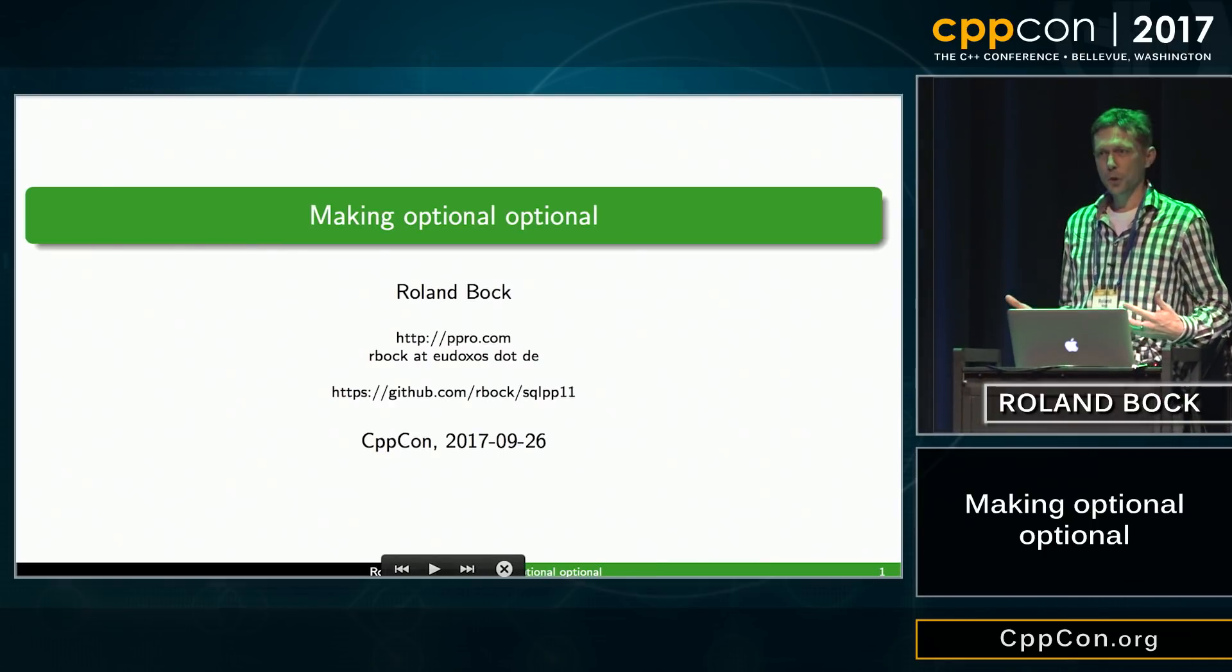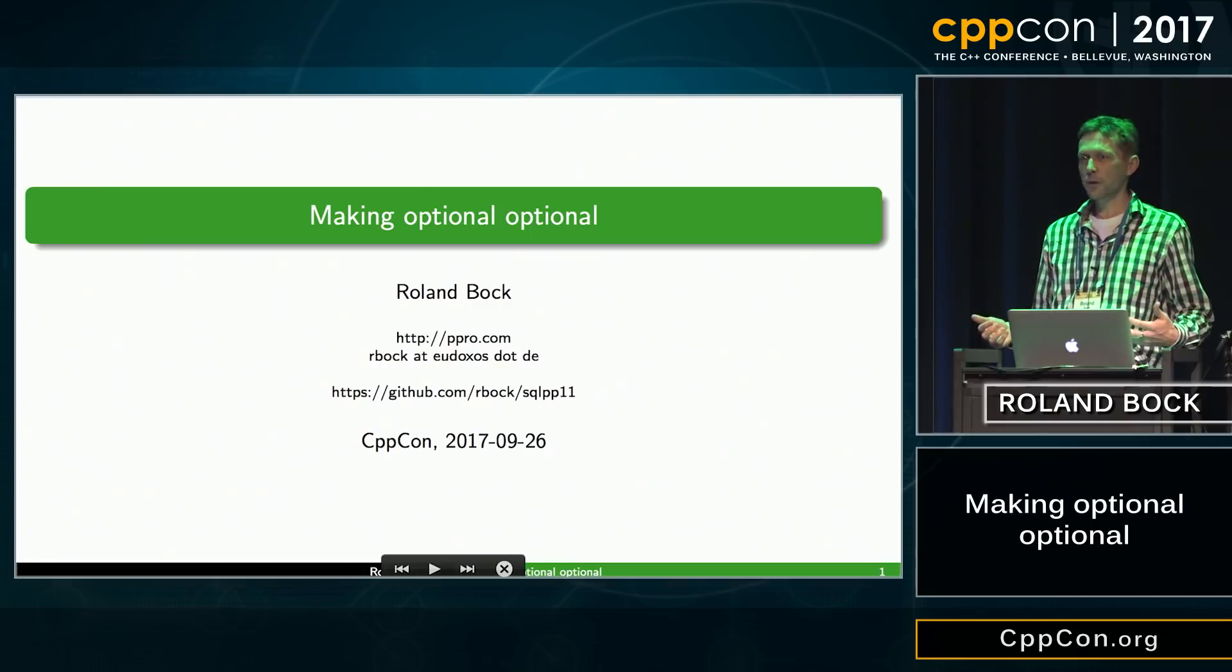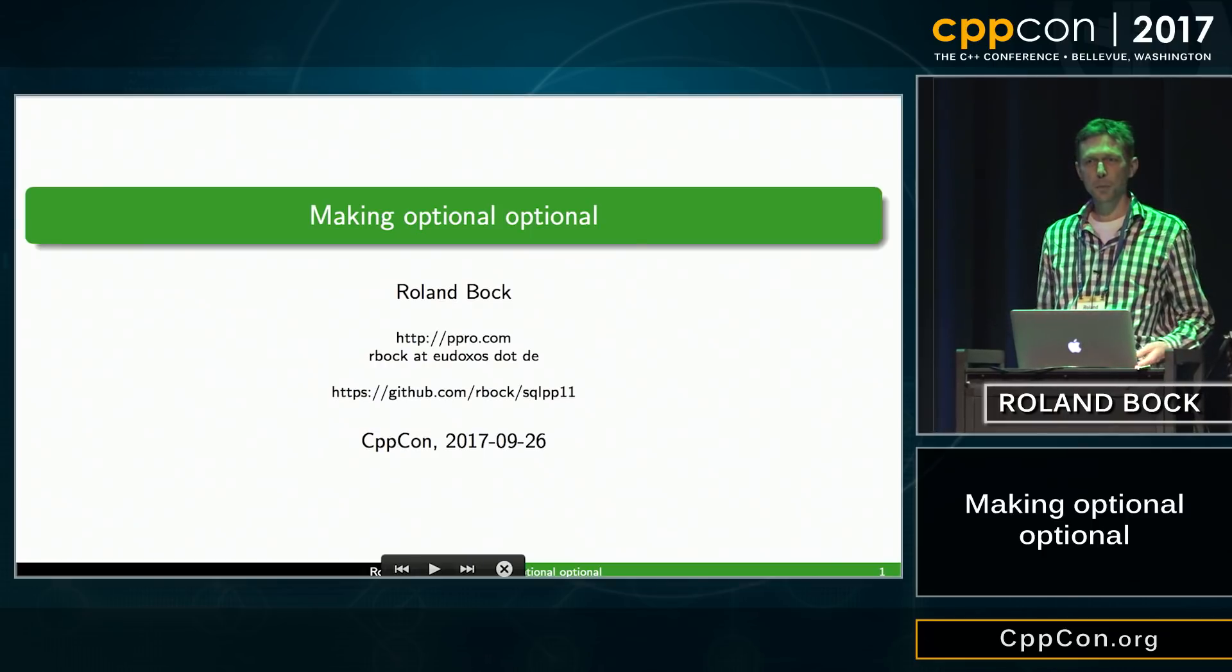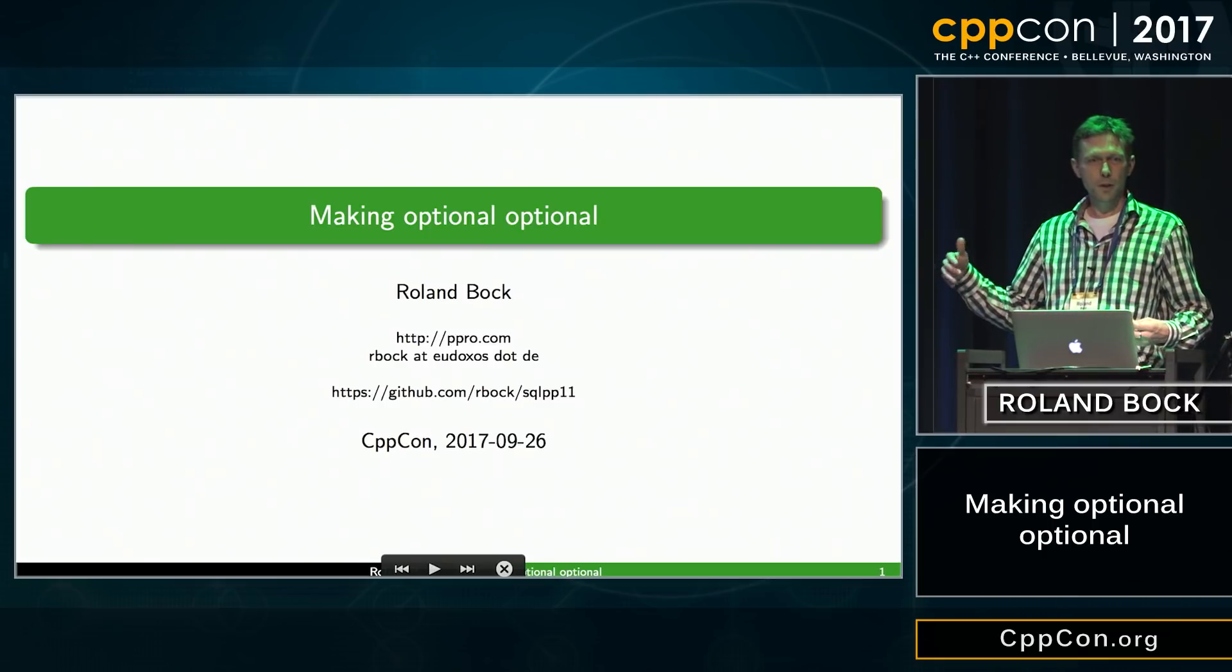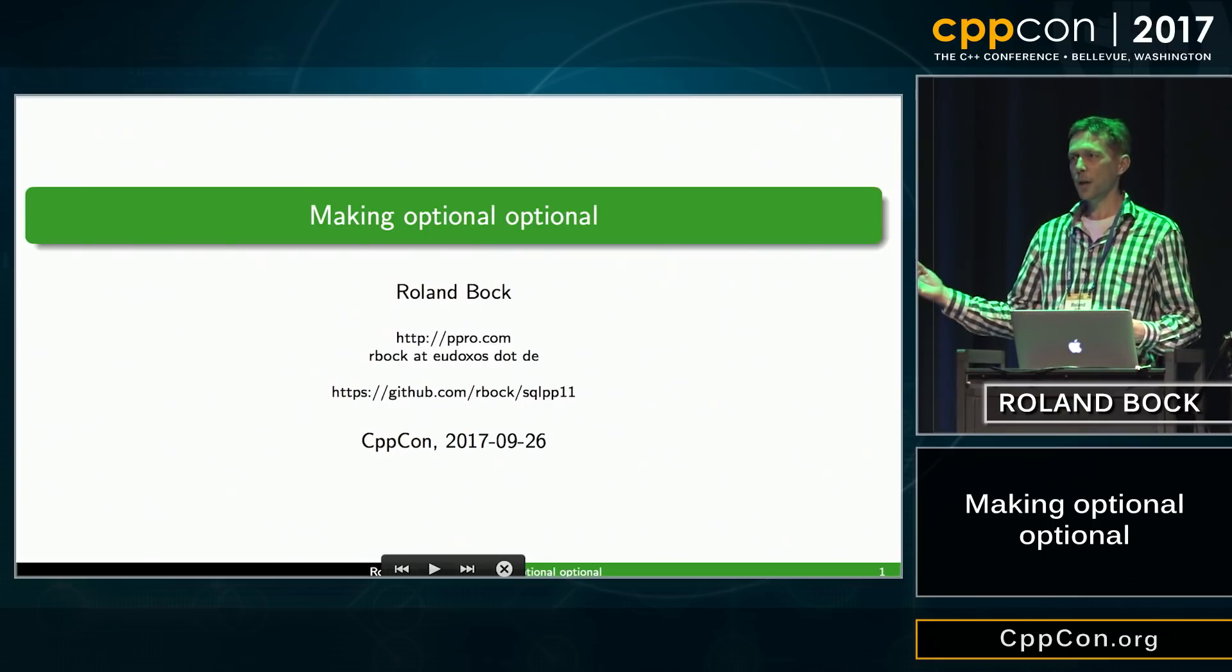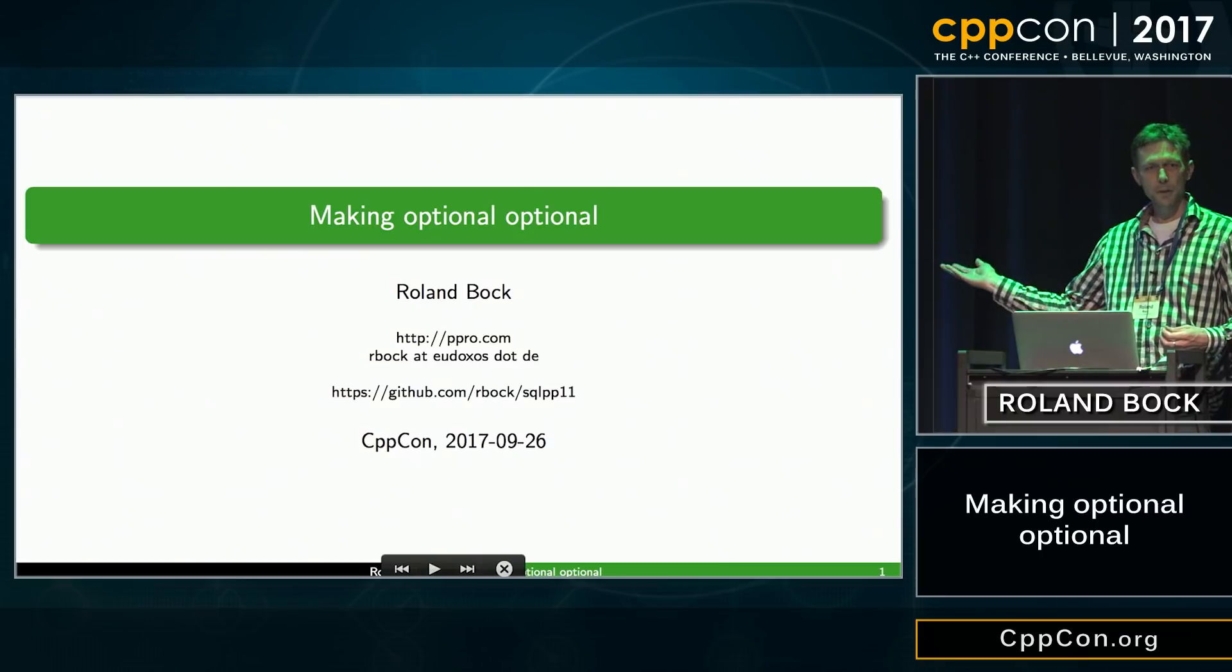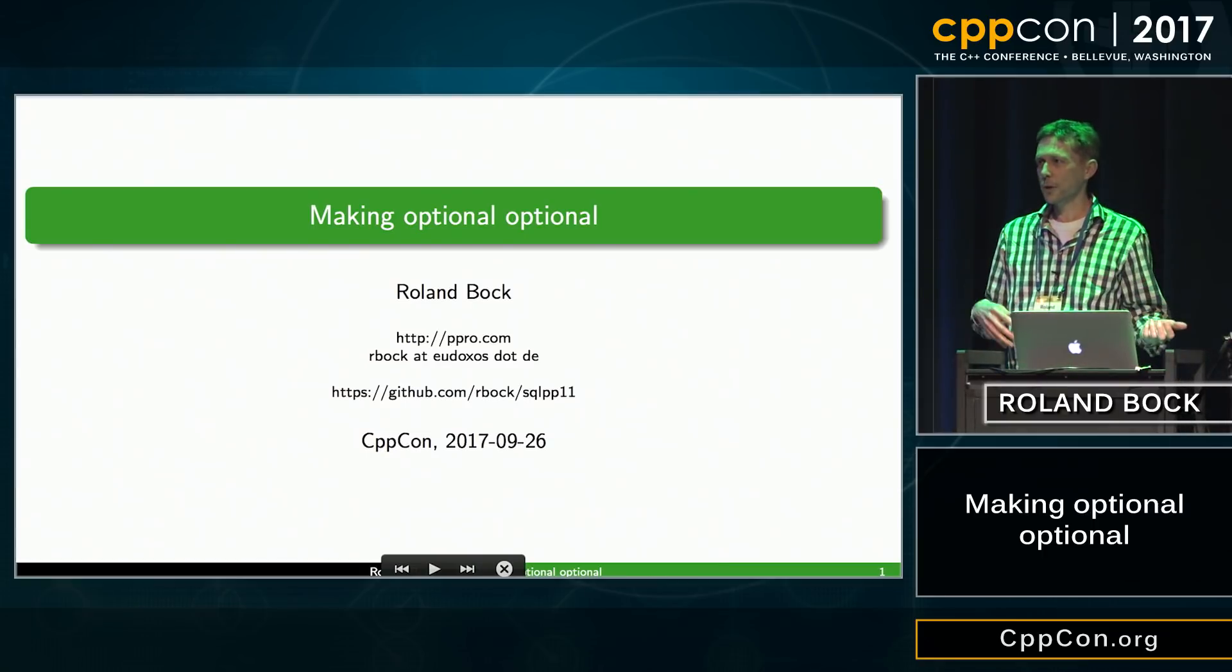So how do you construct an optional? If you look into the documentation at CPP reference for instance, well you construct an optional, default construct it, then if you have a value, then you assign this value to the optional and then you return it because all the examples that you see